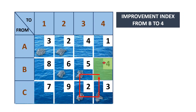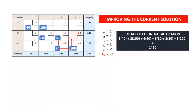For the last route, from B to 4, placing plus, minus, plus, minus gives an improvement index of minus 2. This means the cost would be reduced by 2 per unit. If you add 10 units on this route, the cost would be reduced by minus 20. This happens to be the cost-saving route because it has the lowest — the smallest — improvement index.